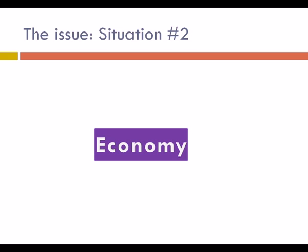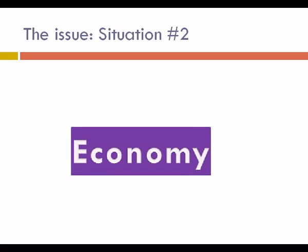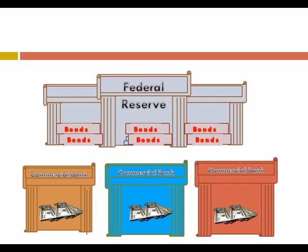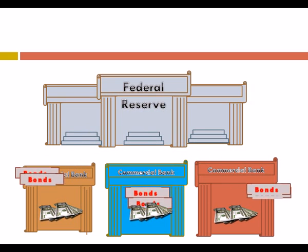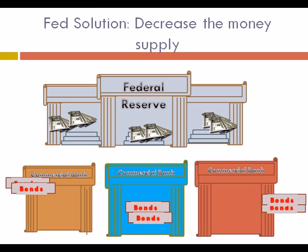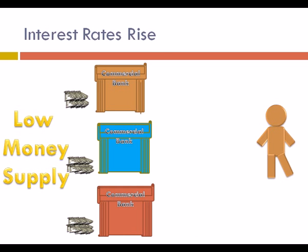What happens if an economy is growing too quickly? In this case, the Federal Reserve wants to take money out of the financial system. It taps into its reserve of bonds and sells them to banks. Because banks are exchanging money for bonds, they are in effect decreasing the money supply. When there is less money in the financial system, banks are not as willing to lend, and to detract borrowers, they raise interest rates.